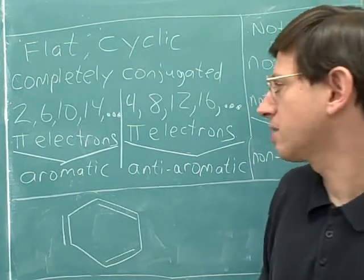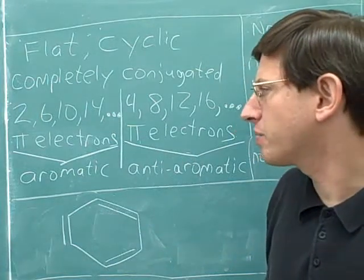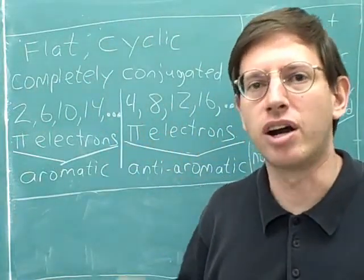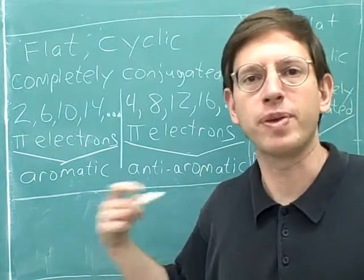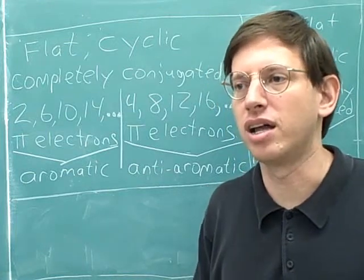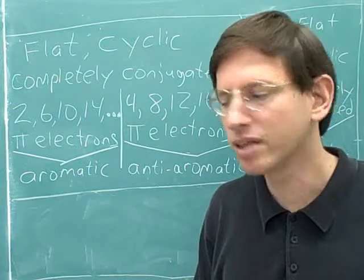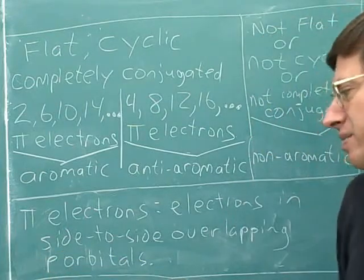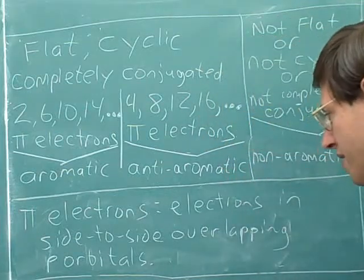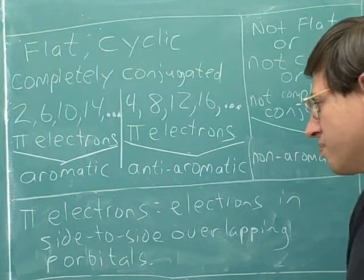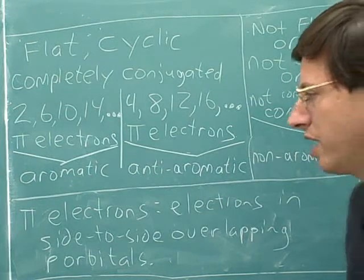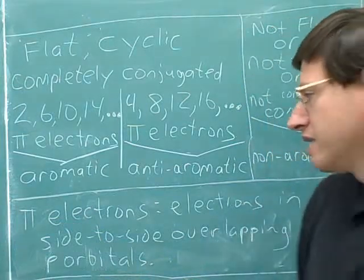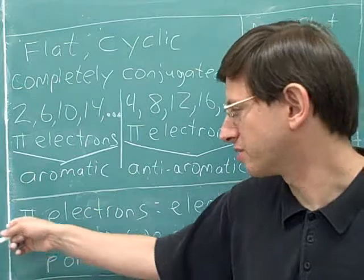Now we're ready to count pi electrons. Pi electrons are electrons that are in overlapping p-orbitals — specifically, electrons in side-to-side overlapping p-orbitals. They're not just electrons in any p-orbitals; those p-orbitals must have side-to-side overlap. By the way, pi is the Greek letter for p, which is why it was chosen for these types of electrons — since these electrons are in p-orbitals, it makes sense to use the Greek letter pi.